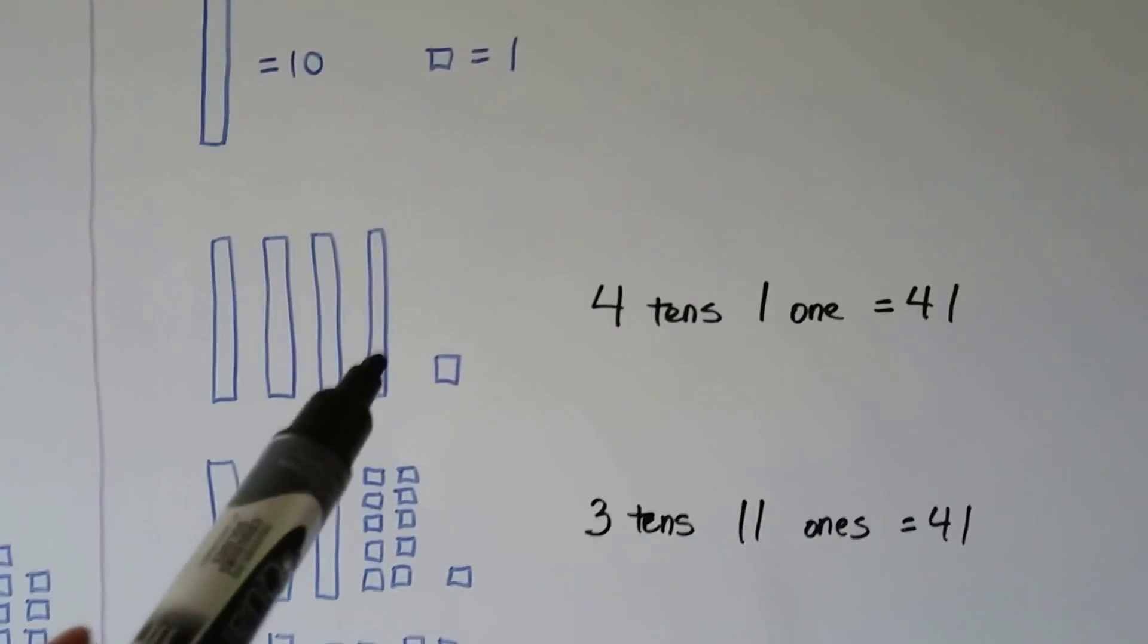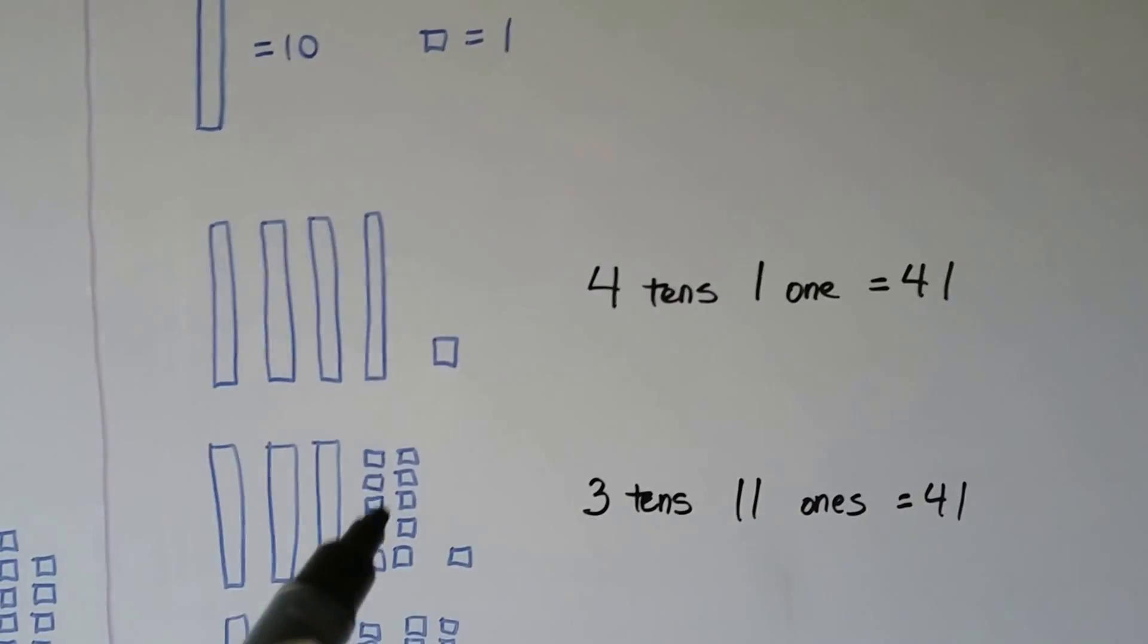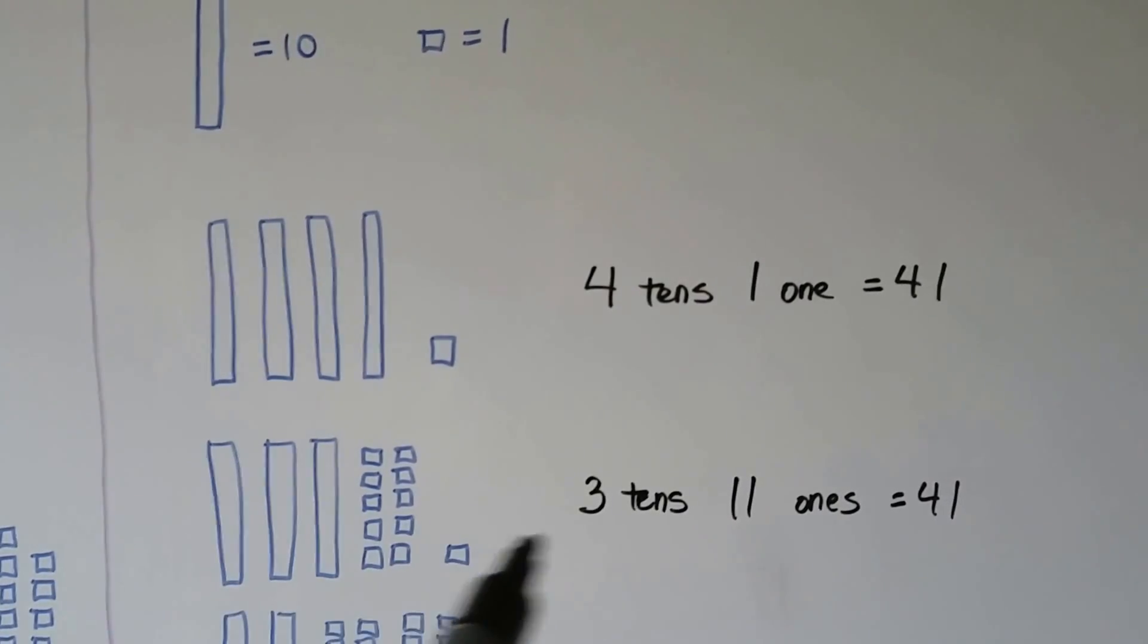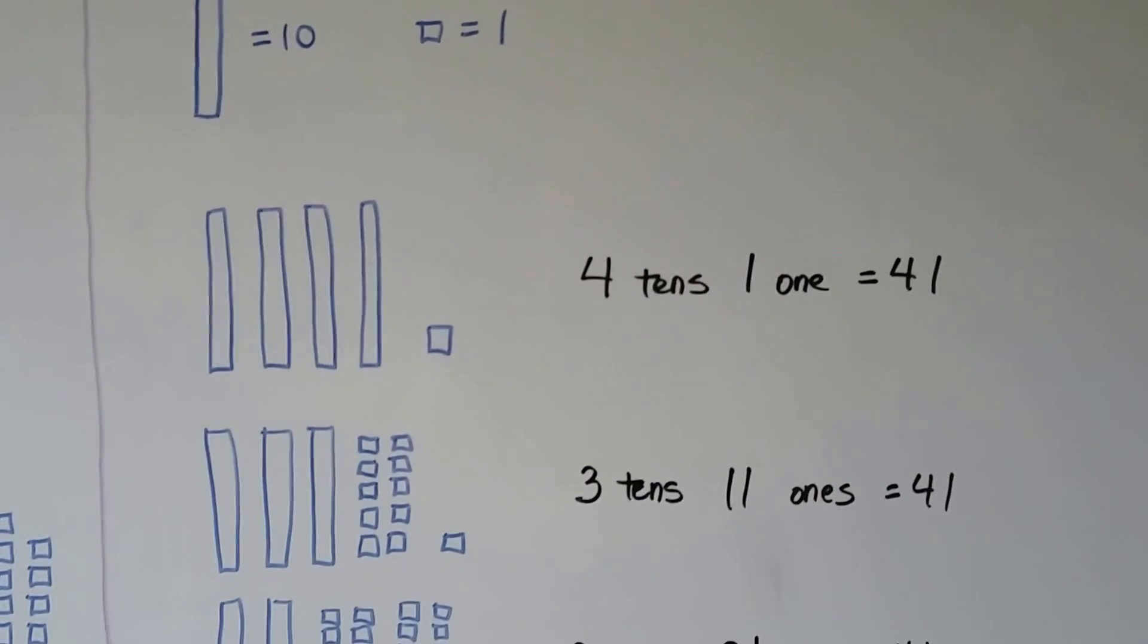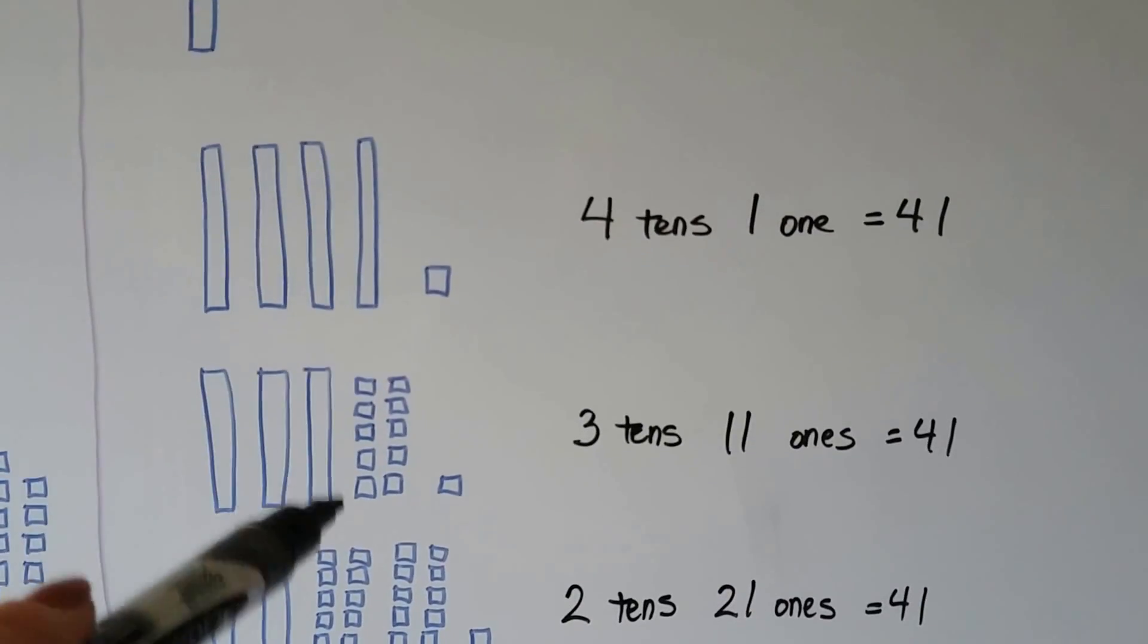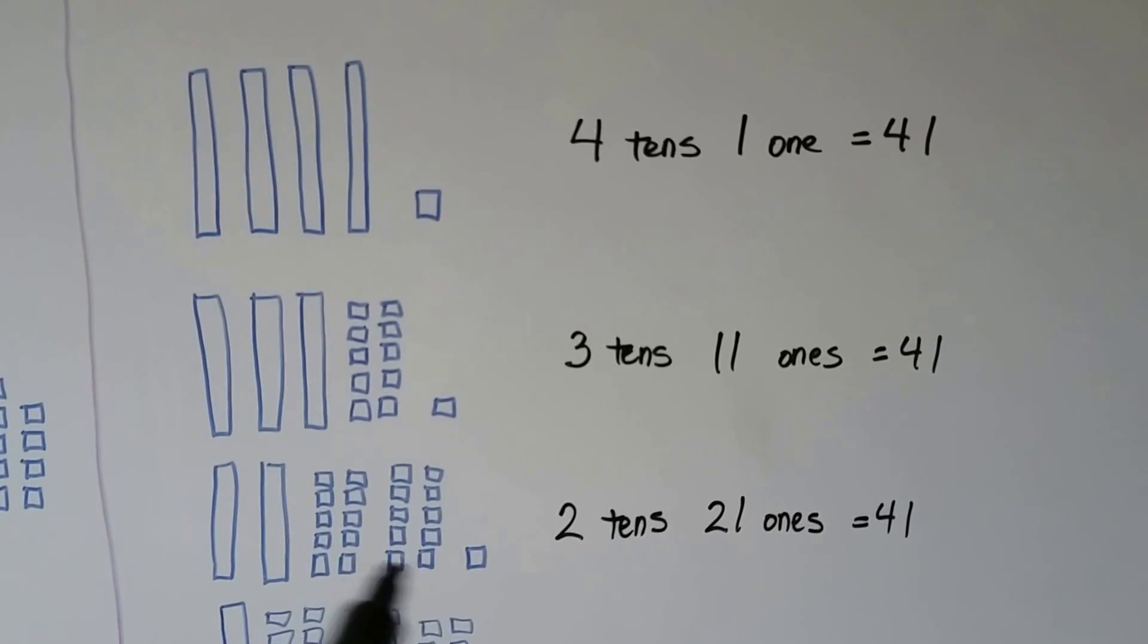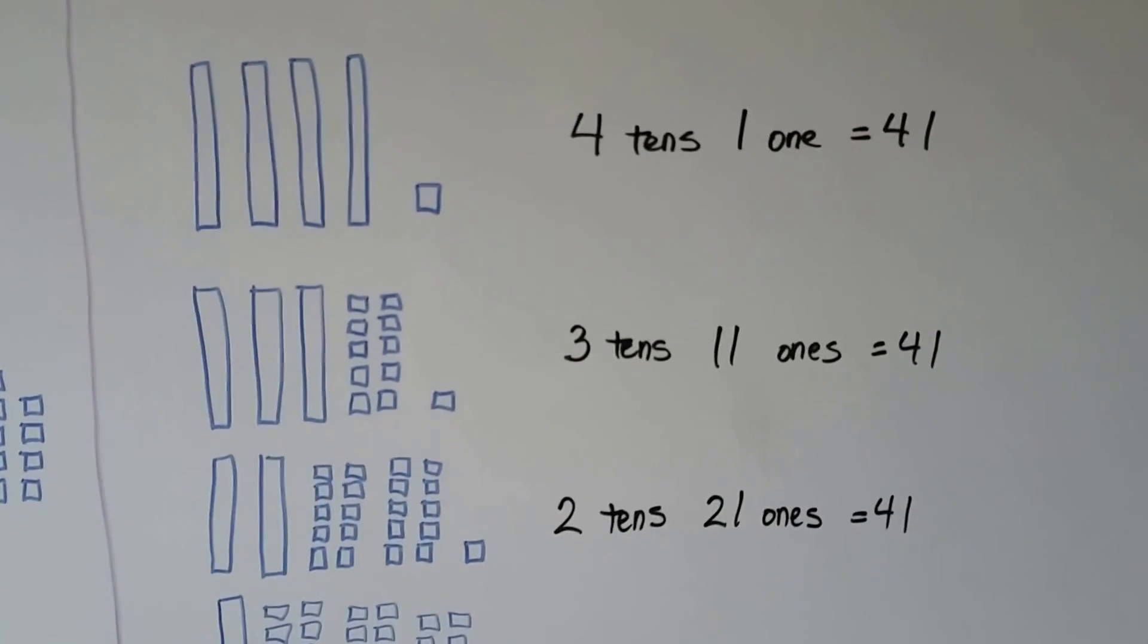We can break one of these rods of 10 into 10 ones and have three tens and 11 ones. That'll make 41. We could break another rod of 10 into some ones and have two tens and 21 ones. That would make 41.